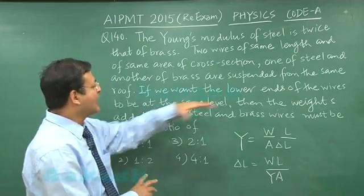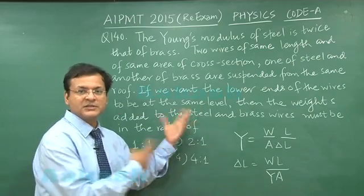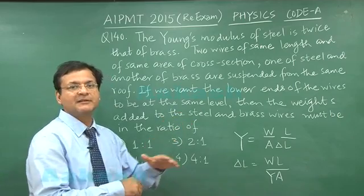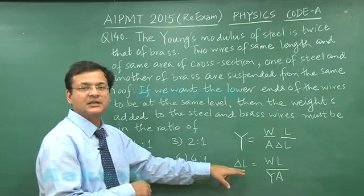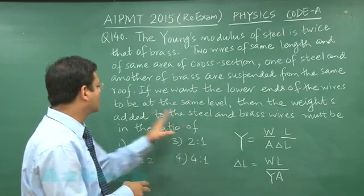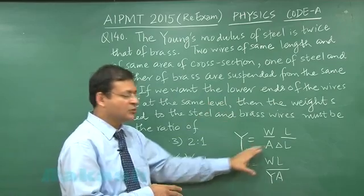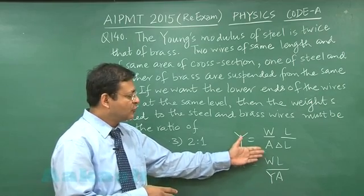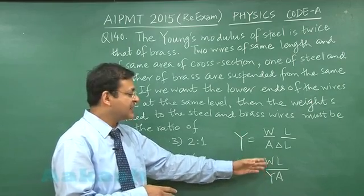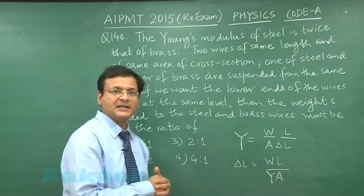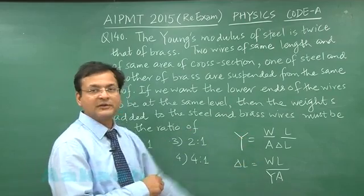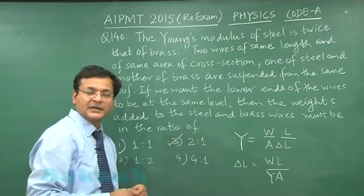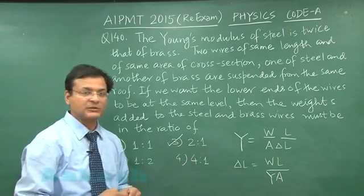They ask: if you want the lower ends of the wires to be at the same level, that means the elongation ΔL must be the same for both wires. Since ΔL = WL/(YA) with L and A the same, W becomes directly proportional to Y. So the ratio of weights equals the ratio of Young's moduli, giving the answer 2:1 — marking answer 3.